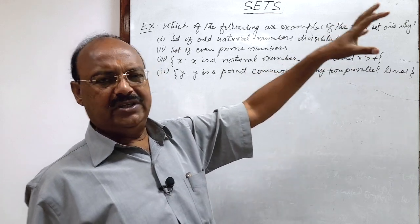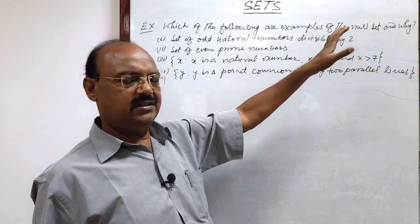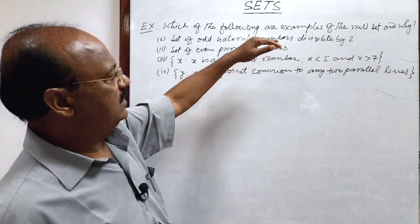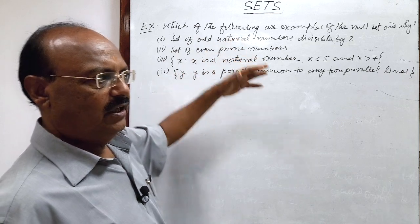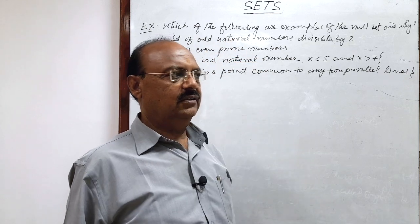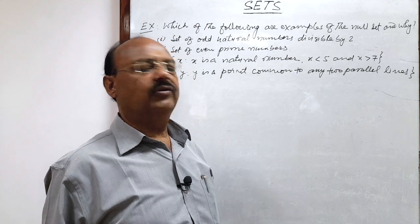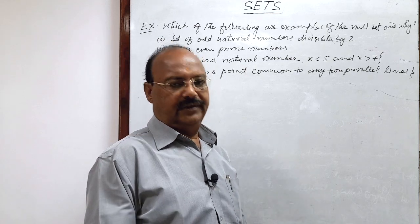You know null set is empty set or void set or null set. So we have to justify if out of these four any set is null set and if it is null set or not a null set, what is the reason behind it? We have to give the justification.